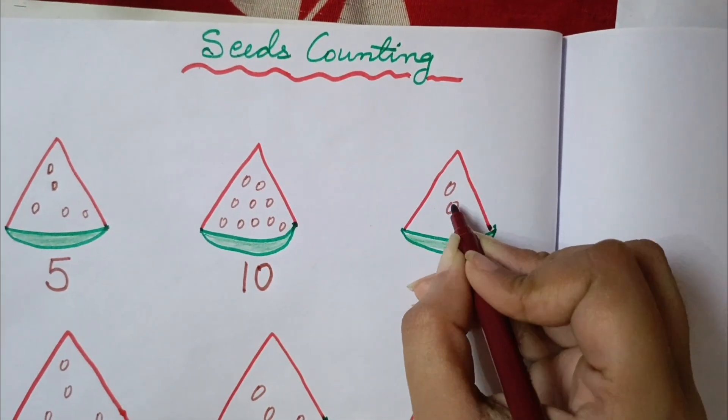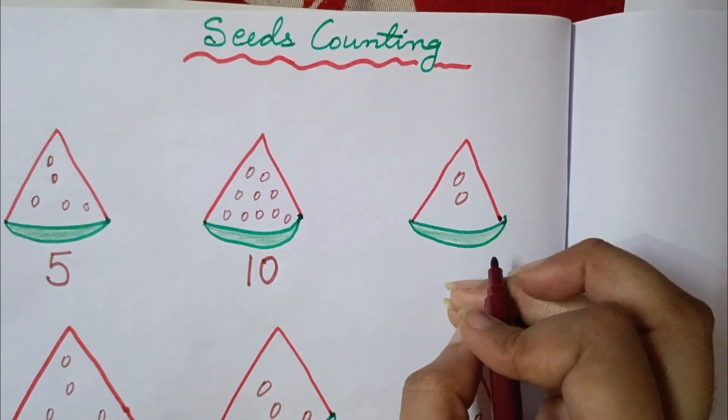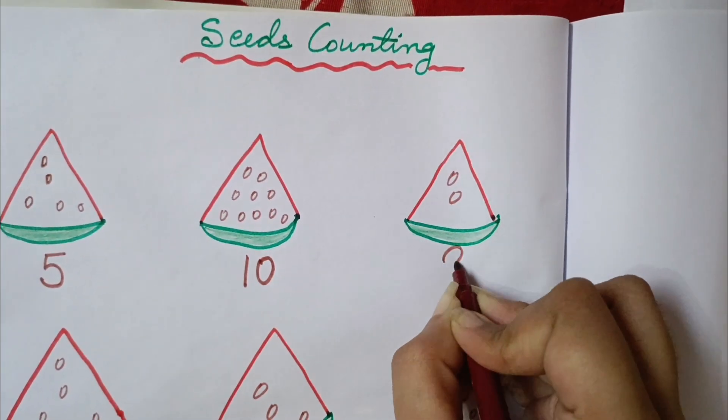Next is 1, 2. In this watermelon it has 2 seeds. So we will write here 2.